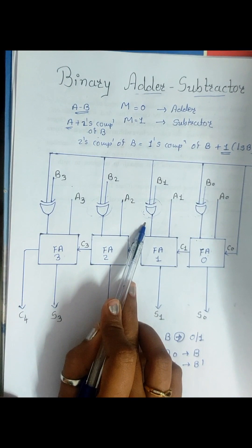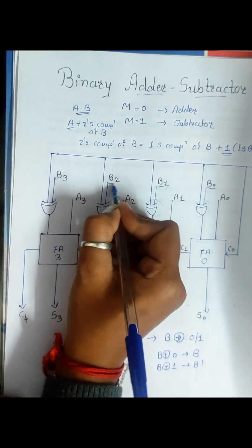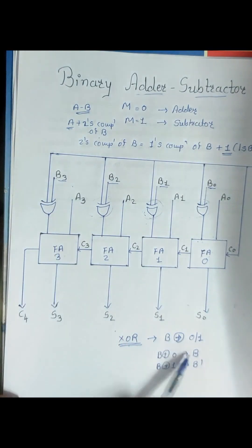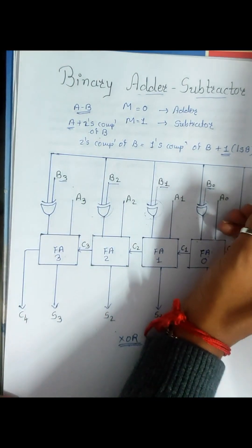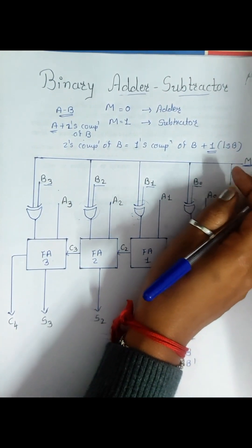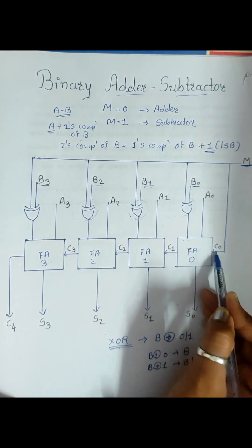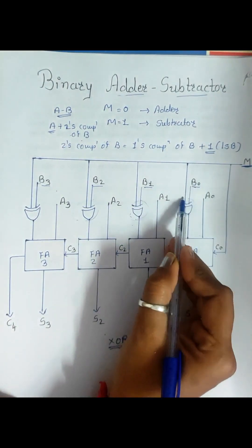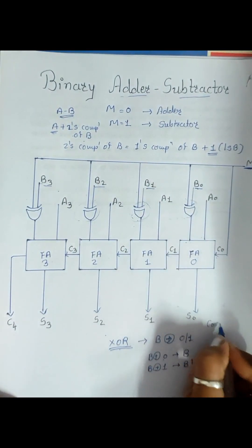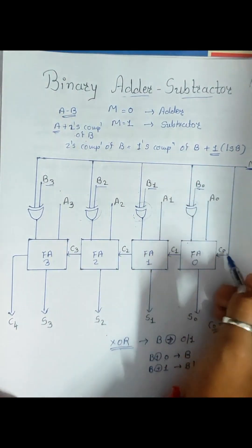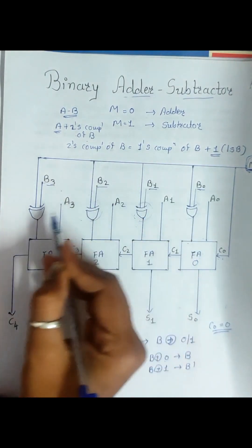The second input of each XOR gate is either 0 or 1, and it is the same for all XOR gates — that single bit is m. As you know the logic of XOR: B XOR 0 gives B, and B XOR 1 gives B dash. So m is also connected as the initial carry C0, meaning m serves as both the XOR second input and the initial carry input.